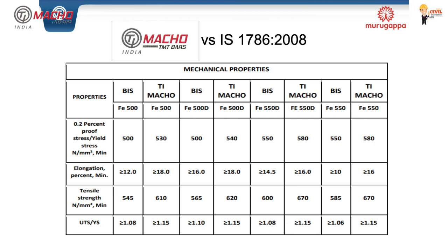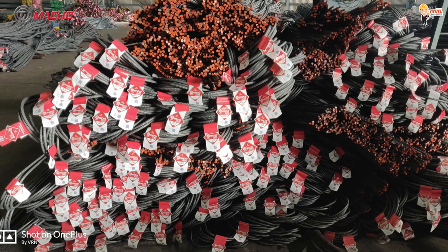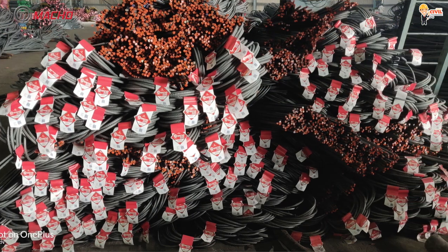For Fe 500D, the tensile strength is 600 N/mm². The 'D' stands for ductility, which means the bar has consistent ductility properties throughout.